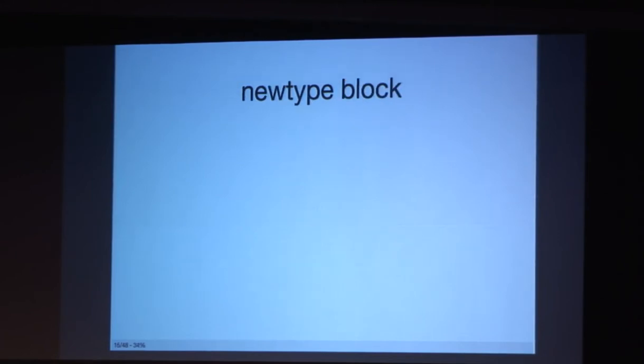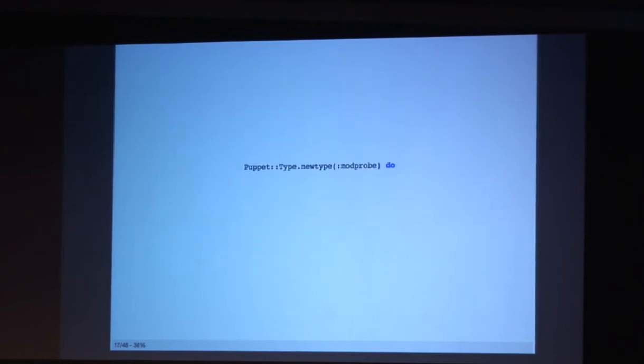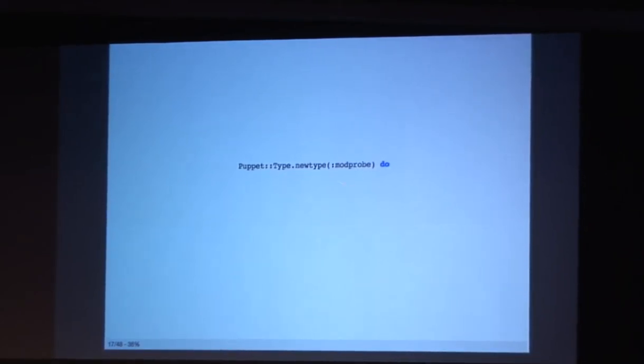It's a new type block. A new type block is actually a method. It's implemented by Puppet Metatype Manager, and it accepts the name of a type and a Ruby block as parameters. So in our Puppet type for modprobe, it looks something like this, which is really small. I apologize. But you can see new type method, type name, and the do block, the do keyword, indicating that it is a block.